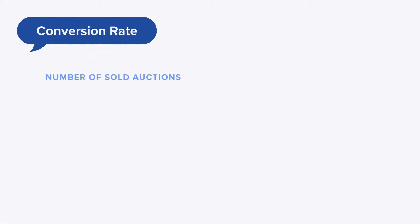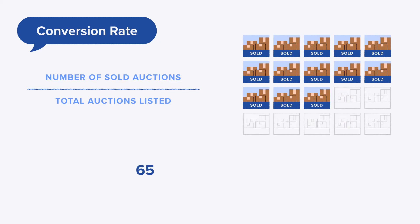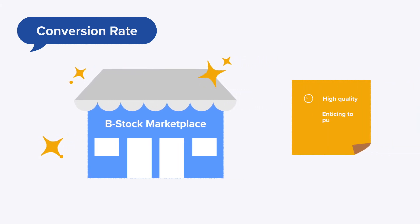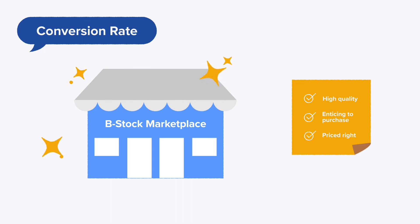Conversion rate is the number of sold auctions divided by the total auctions listed. For example, a seller who has sold 13 auctions out of 20 total auctions will have a conversion rate of 65% — 13 divided by 20 equals 0.65, or 65%. Conversion rate maintains buyer interest and is important to sustaining a healthy marketplace. Buyers want to see auctions that are high quality, enticing to purchase, and priced right. A high conversion rate means buyers are happy with what they see, which allows B-Stock to generate interest among more buyers, leading to more bids and higher sales prices.